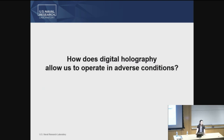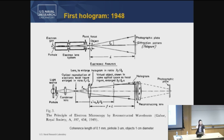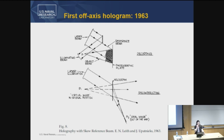I'm going to examine these topics from the question of digital holography: how does digital holography allow us to operate in adverse conditions? A slight history lesson — the first hologram was created in 1948. The coherence length of the electron gun was 0.1 millimeters with a pinhole of 3 microns and objects limited to 1 centimeter in diameter, so there were a lot of constraints. The invention of the laser allowed us to really expand our ability to do holography, and in 1963 the first off-axis hologram was created, which eased constraints in recording interference patterns.